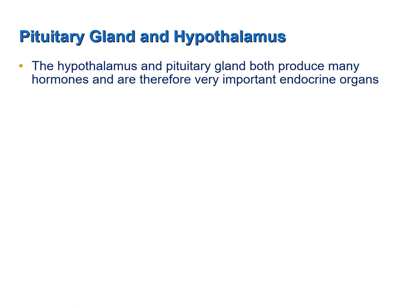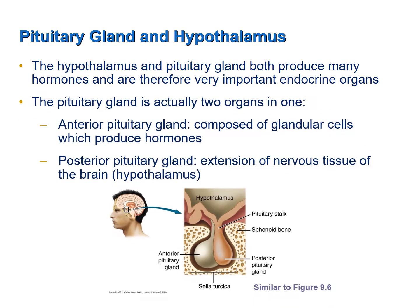The hypothalamus is the inferior portion of the diencephalon of the brain, and attached to the hypothalamus is a grape-like structure called the pituitary gland. Both the pituitary gland and the hypothalamus are very important endocrine organs that produce hormones. The pituitary gland is a bit of a misnomer — it is not one single gland, but actually two organs in one.